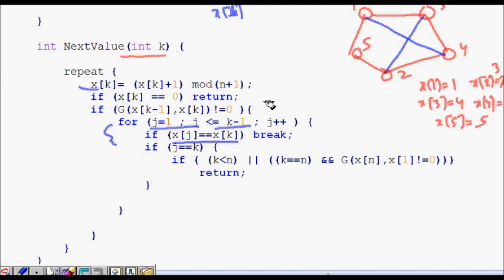Another thing is the xkth node that I'm using should be connected to my previous node. Only then it can form a cycle. This is checked here. G is the adjacency matrix of the graph. xk minus 1 and xk, they should be connected. This is there.